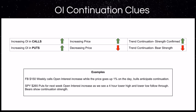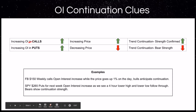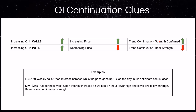Now we're going to look at how we can utilize this information to look for clues — either continuation affirming the price action, or signals of a potential incoming reversal due to divergence. For continuation clues: if we see increasing open interest in calls while the price is increasing, that shows trend continuation and strength confirmed. For example, Facebook $150 weekly calls — open interest is going up, meaning people are creating contracts, calls are being purchased while the price is going up 1% on the day. Bulls are anticipating continuation because while the price is going up, they're still buying those calls looking for further follow-through.